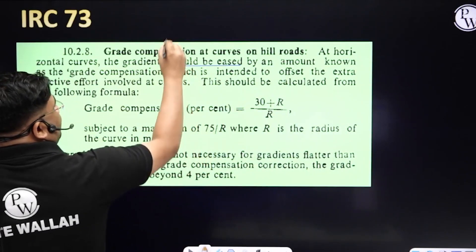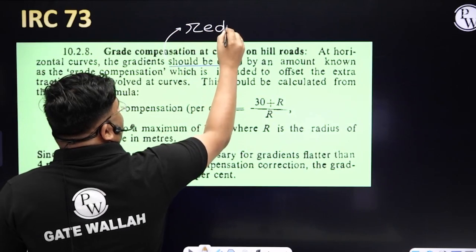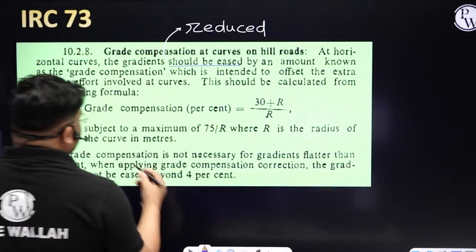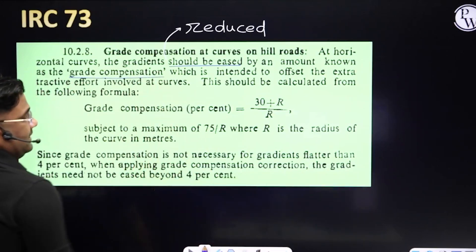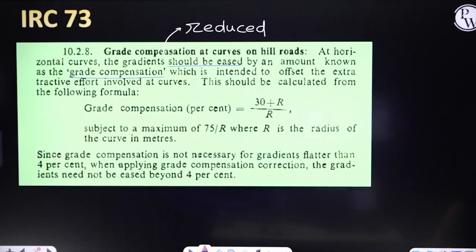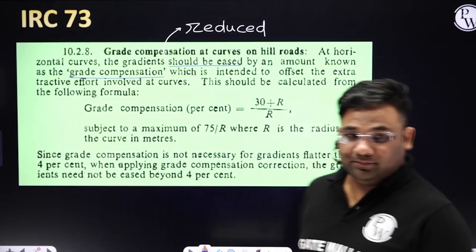Should be eased means reduced, by an amount known as grade compensation. Jitna reduction hua, usko hum grade compensation keh rahe hai. The reduction is known as grade compensation. The code then says: this should be calculated from the formula — grade compensation in percentage = (30 + R) / R, where R is the radius of the curve in meters, subject to a maximum of 75 / R.